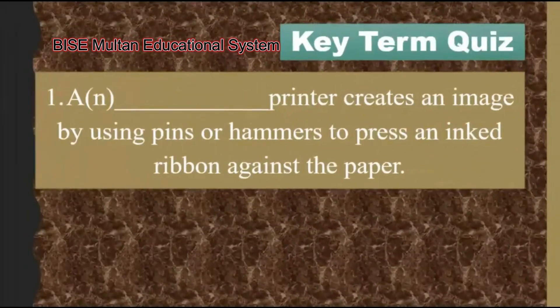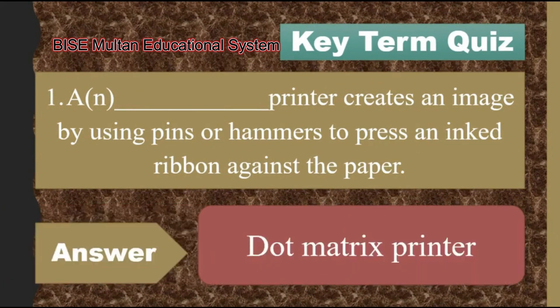Question number 1, from the key term quiz. A blank printer creates an image by using pins or hammers to press an ink ribbon against a paper. The answer is dot matrix printer.